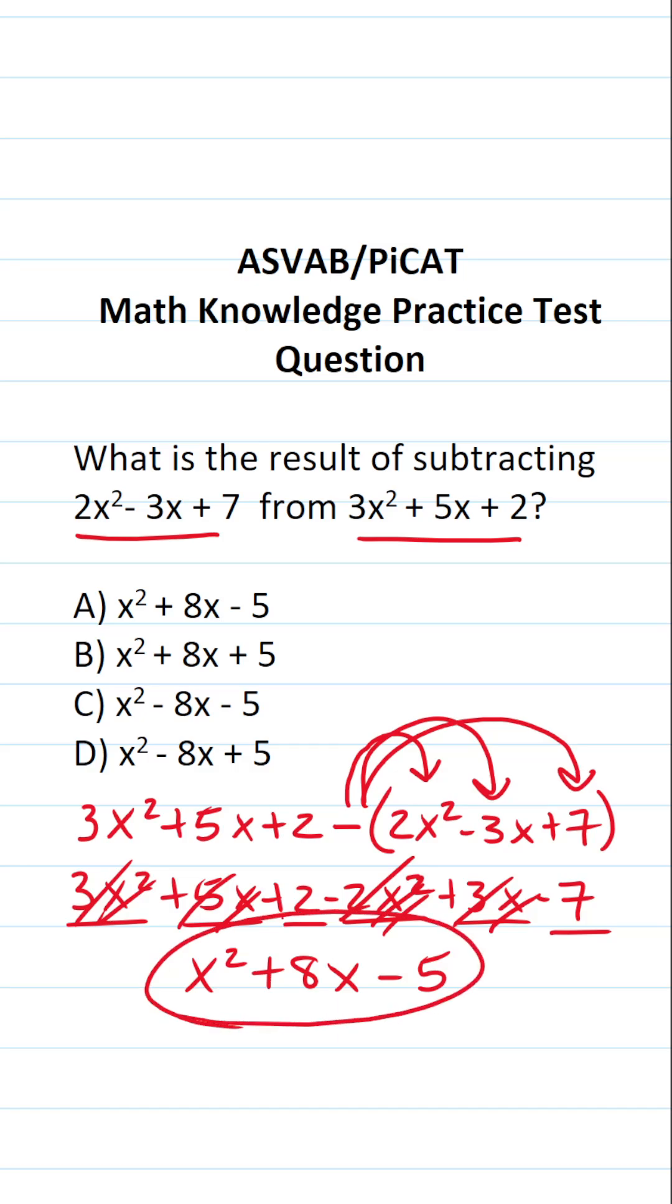So here is our answer. It's going to be x² + 8x - 5, which is answer choice A.